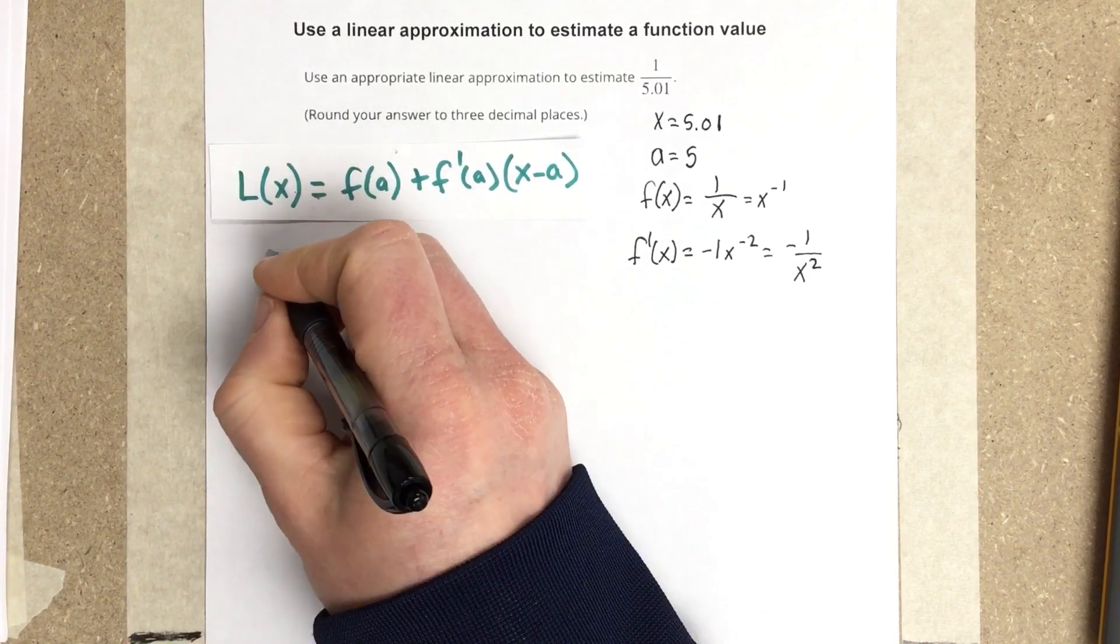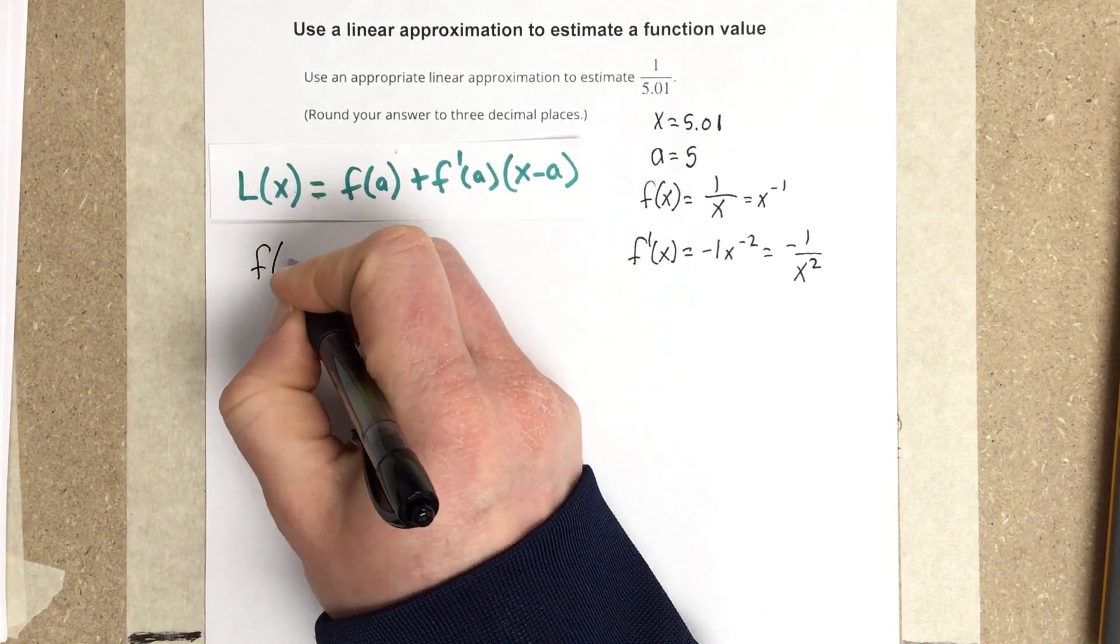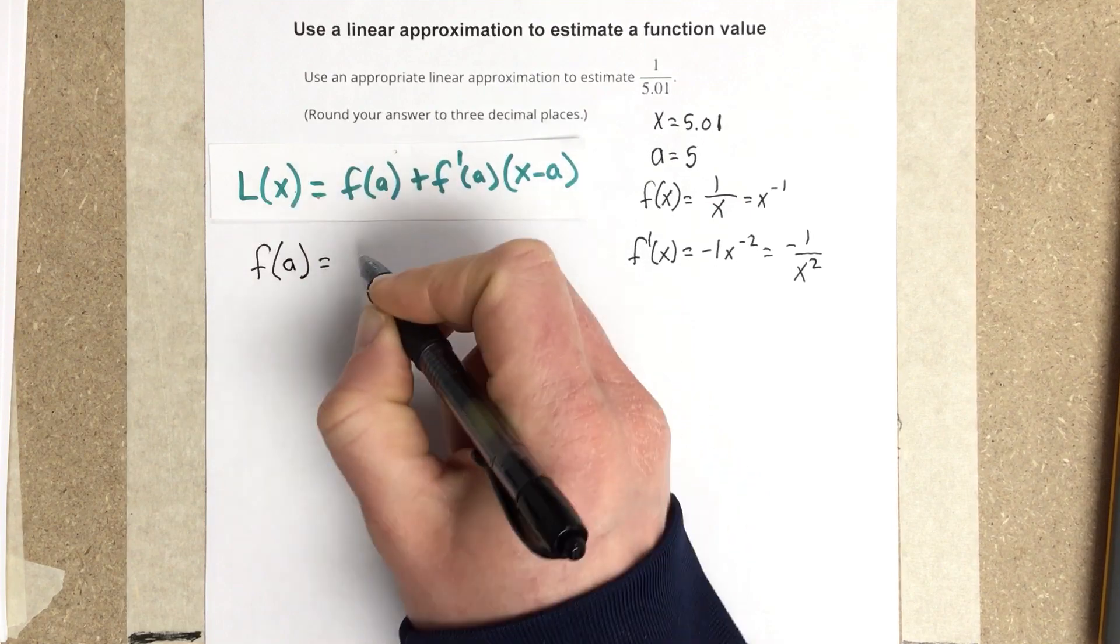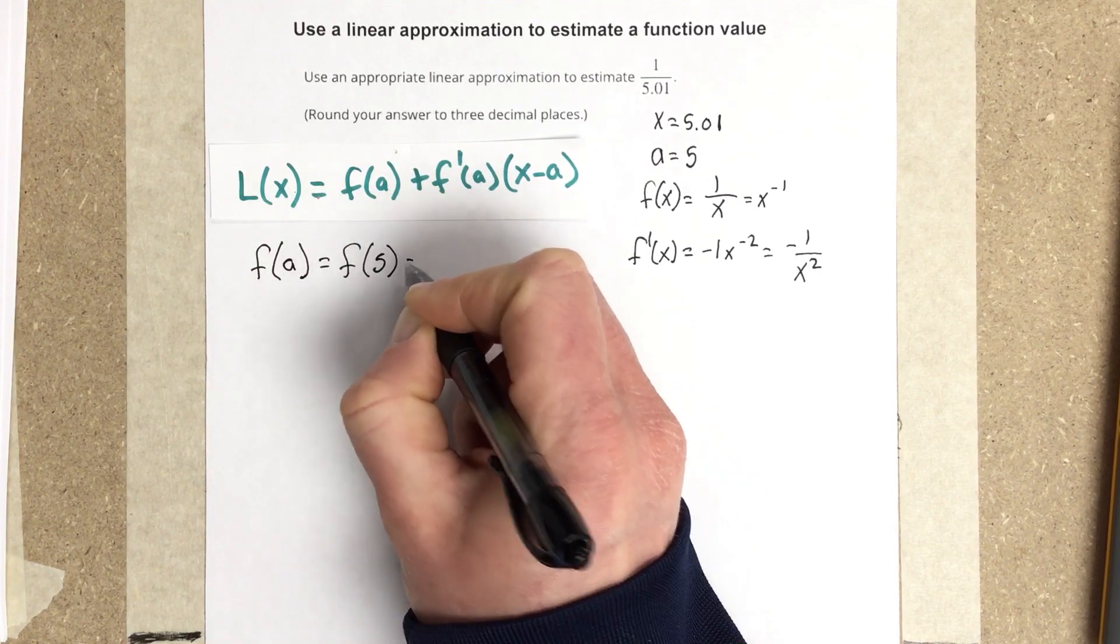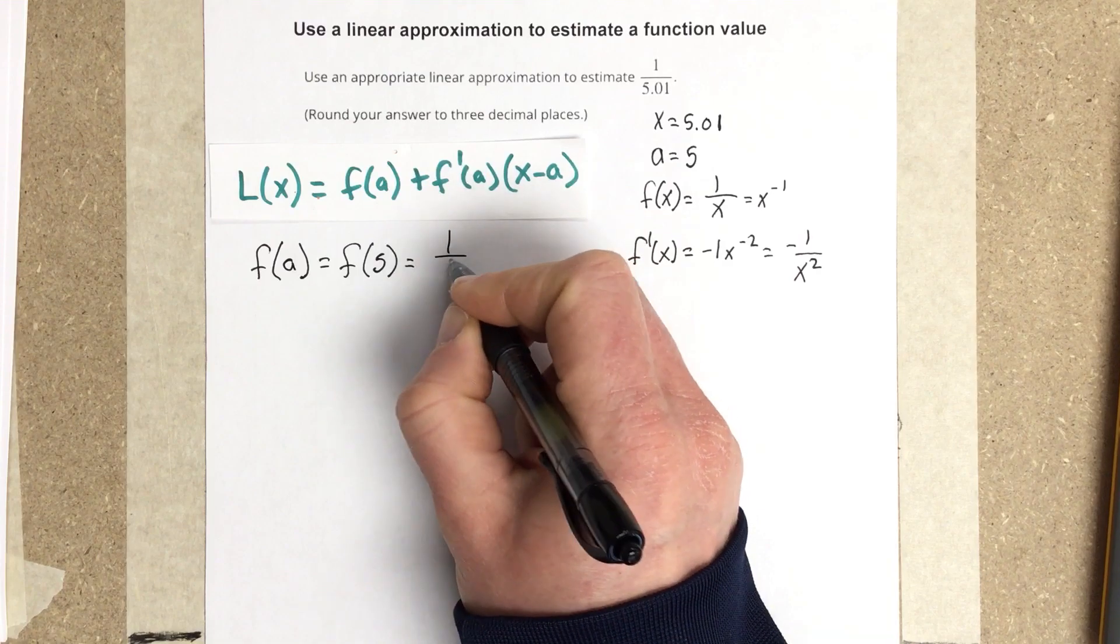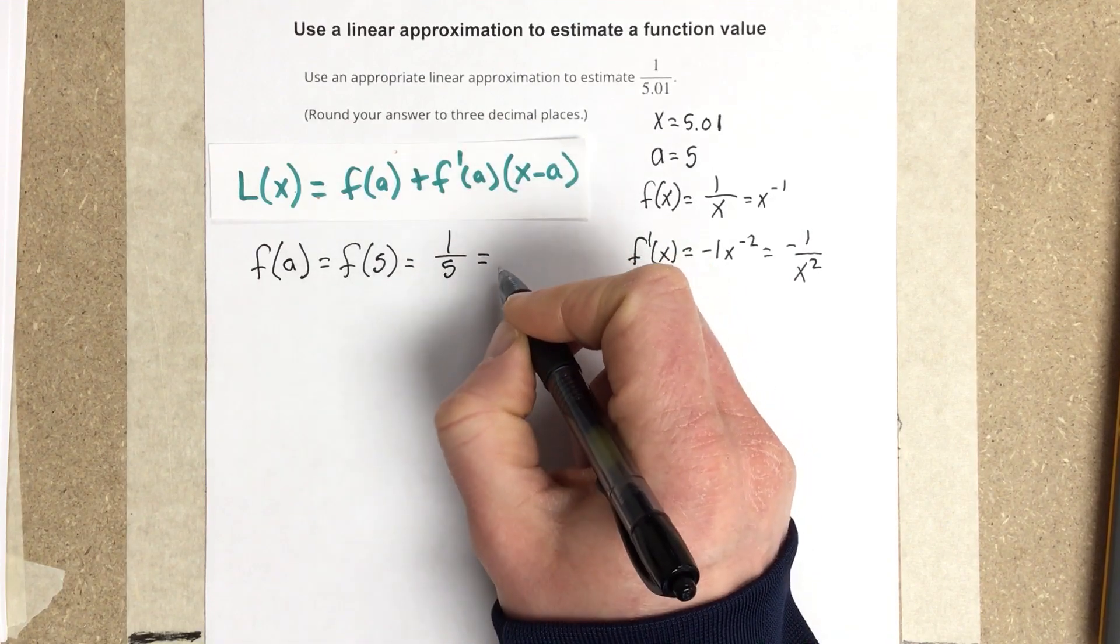So now I'm going to find what f of a is, because I need that for the function. And f of a would be f of 5, which would be 1 over 5, which is equal to 0.2.